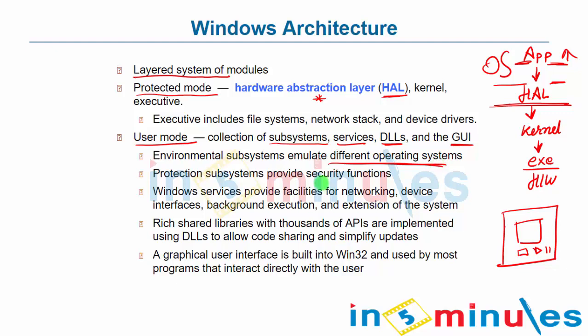The protection subsystem is used to provide security — data security, user-to-user security, and application security with reference to the user. All this can be done in Windows architecture. Windows services provide facilities for network devices, interfaces, and background execution extension. You get internet and LAN through networking services; the device interface allows connecting a printer, mouse, keyboard, speakers, and other devices. Background execution means services running in the background allowing certain apps to run, and extension of the system includes adding themes, new software, or overriding a default software with something else.